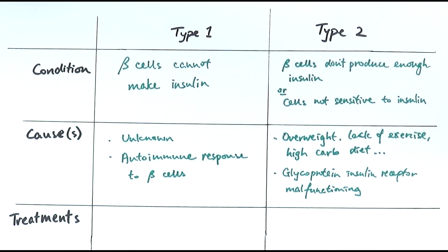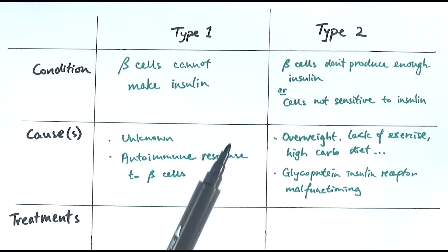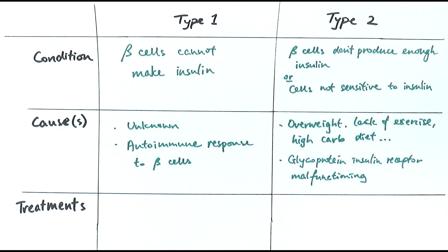There are major differences between type 1 and type 2. Type 1 is where the body doesn't make insulin at all or not enough, whereas type 2 is mainly about cells becoming desensitized to insulin due to lifestyle choices or a problem with insulin receptors. For type 1, since the beta cells can't make enough insulin, the most common treatment is insulin injection.